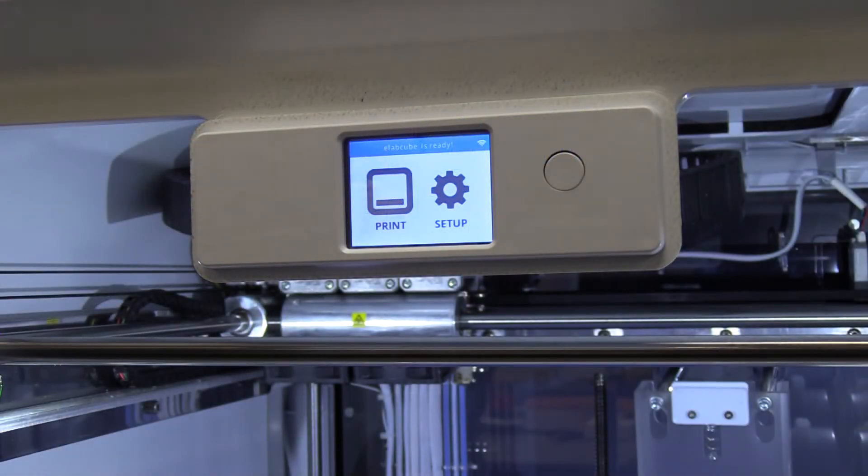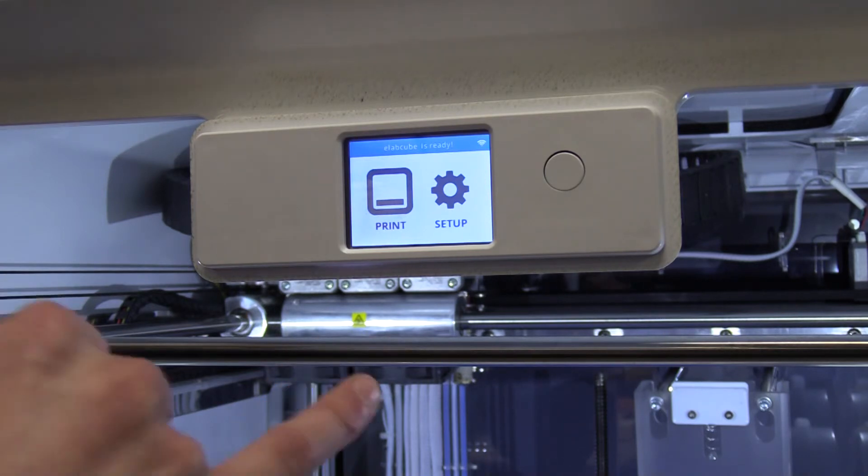Once the 3D printer is turned on and the USB drive is inserted into the port of the 3D printer, you will see this ElabCube is ready home screen. Now, it gives you two options and since we are completely finished setting up and have our STL files saved, we are going to start by hitting the print button.